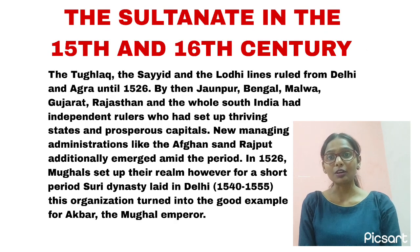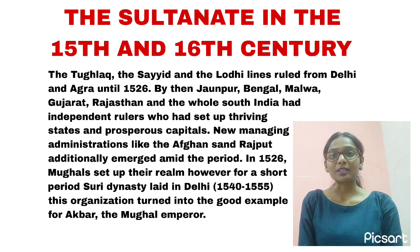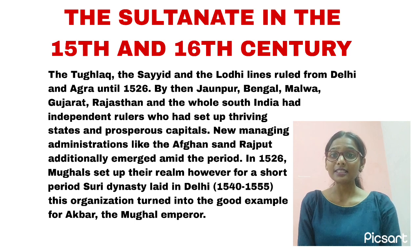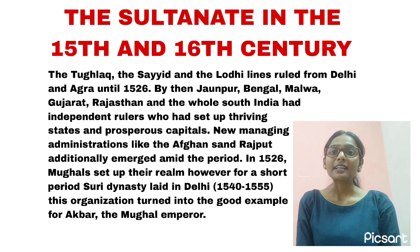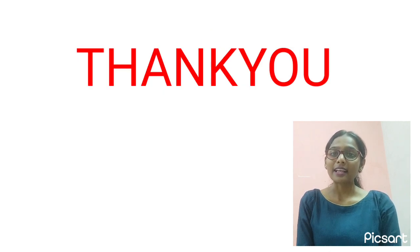We have now reached the end of the lecture. In this module, we learned that Delhi became the capital city after the establishment of the Delhi Sultanate in the 13th century. The Delhi Sultanate consists of five dynasties: namely the Slave dynasty, the Khilji, the Tughlaq, the Sayyid, and the Lodi dynasties. Thank you for listening, and I hope this video helps you all.